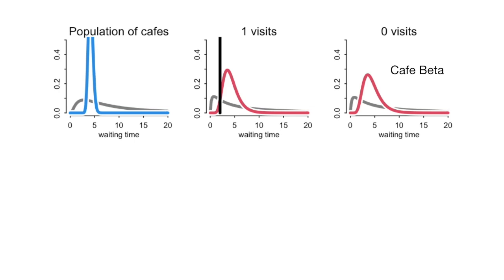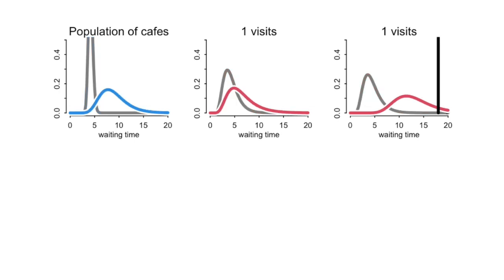Cafe beta's expectation is not the gray curve where all the cafes started, but the red curve — it looks a lot like cafe alpha's, but is a little bit closer to the population distribution. The golem visits cafe beta and gets a really long wait time — cafe beta is not such a well-staffed cafe. There's been a big change in the posterior distribution from the prior for cafe beta, but the red curve is not piled up on the observation because the prior is exerting influence. This is just one coffee, so it's a limited amount of evidence.